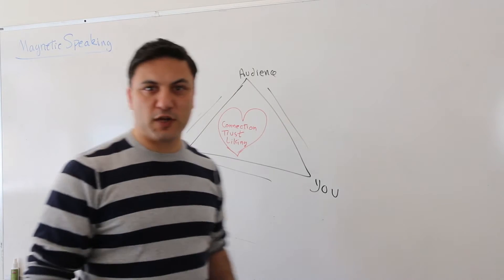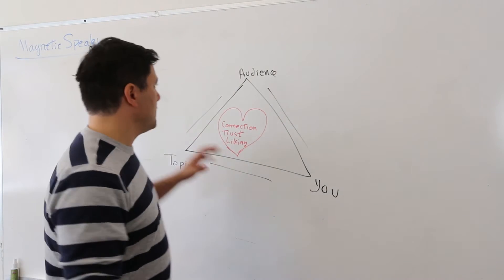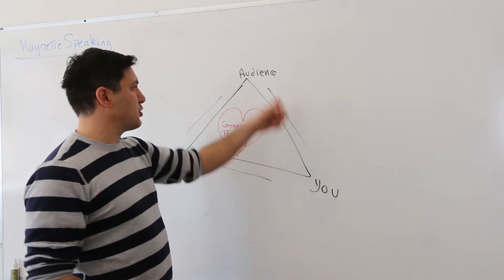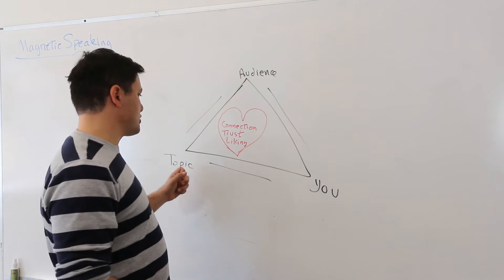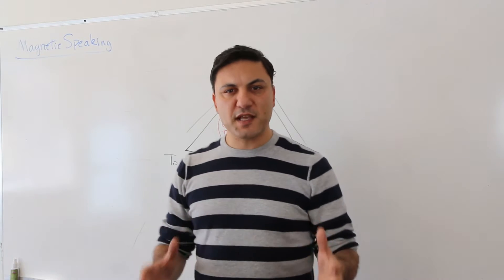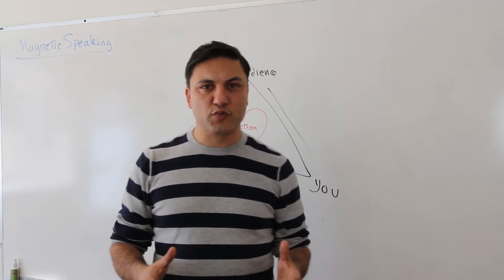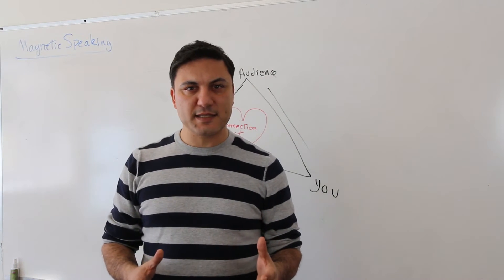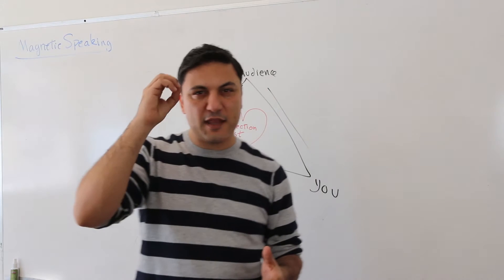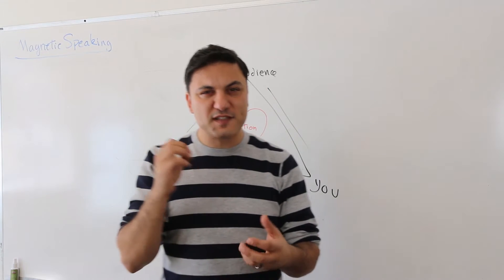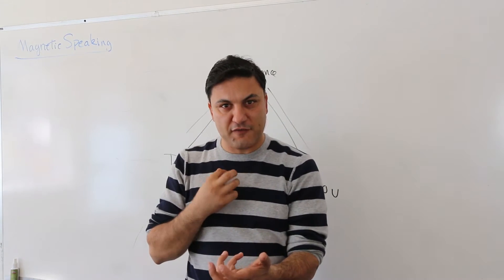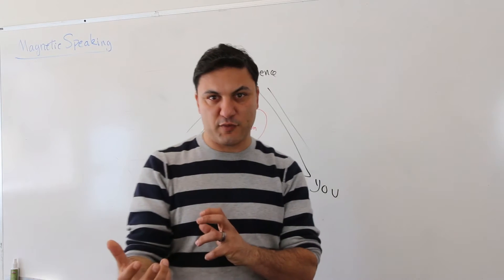Here is the triangle of trust. It looks like this: there's you, there's your audience, and there's your topic. The best way to connect with your audience is to think about them and think of something in your personal life or professional life that connects you with them.